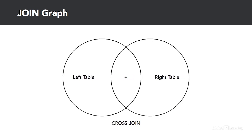The cross join returns all rows from the left table combined with all rows from the right table. This type of join is also known as a Cartesian product and is not often used due to the large amount of results returned. You can also join a table to itself in what is known as a self join — useful when you want to create a result set joining records in a table with other records from the same table. For example, an employee table where managers are also listed as employees, and you want a result set showing all employees and their managers.